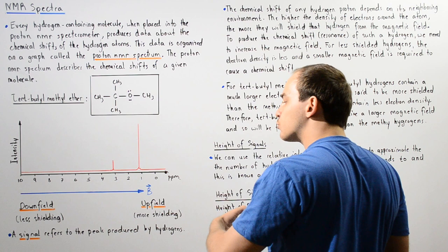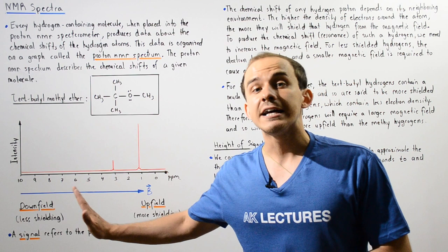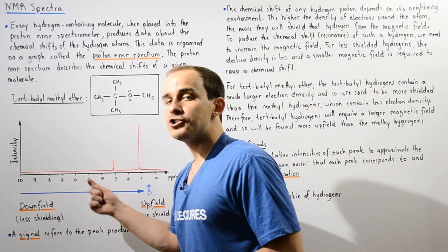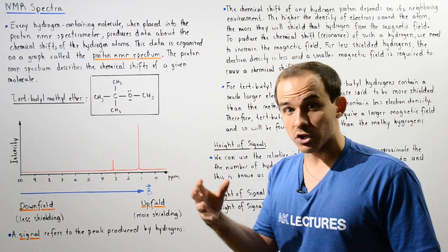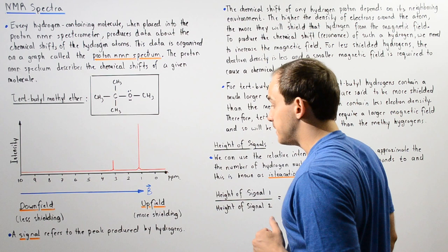The left section of our spectrum is known as the downfield section. Here we have less shielding taking place — also known as deshielding — and because we have less shielding, a smaller magnetic field is required to produce that chemical shift. That means as we go from the left side to the right side, the strength of the magnetic field B increases, as shown by the blue arrow.